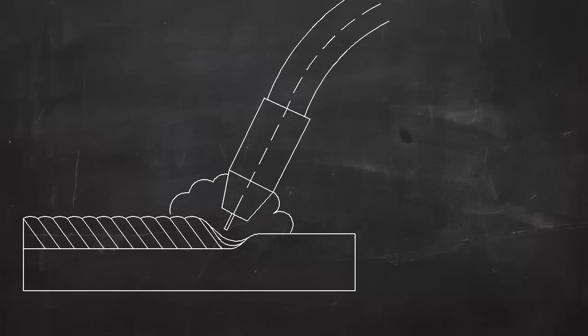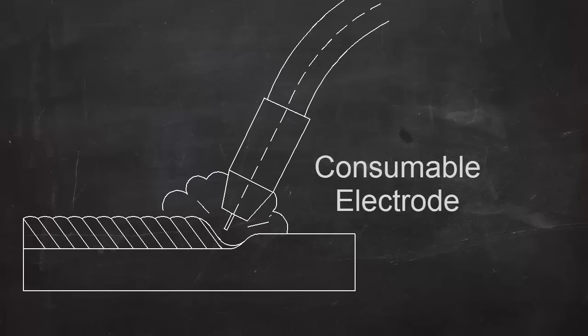Because the wire electrode melts as it's being used, MIG is called a consumable electrode process.